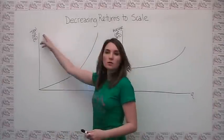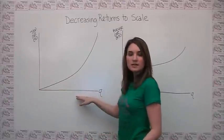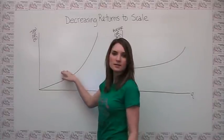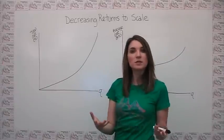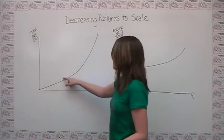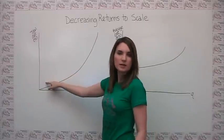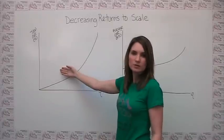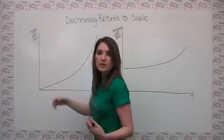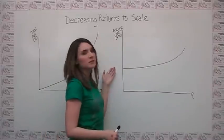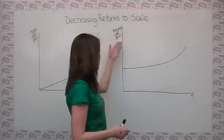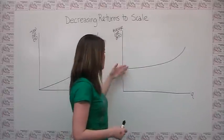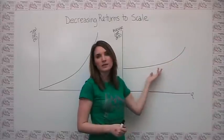We could look at total cost versus quantity. Notice here that as our quantity produced increases, again, our total cost is increasing just because it costs money to produce more stuff. But we'll notice here that it's increasing at a rate that's faster than linear. So our cost is increasing at an accelerating rate compared to our quantity. This corresponds to a situation where if we looked instead at average cost versus quantity, we would see that when we have decreasing returns to scale, our average cost is increasing as our quantity is increasing.